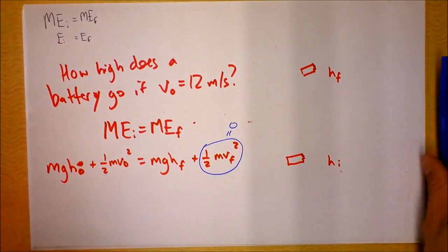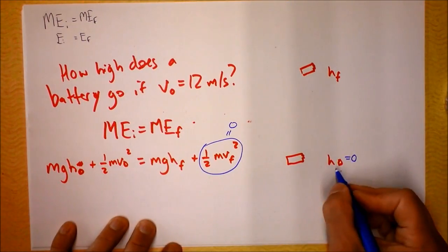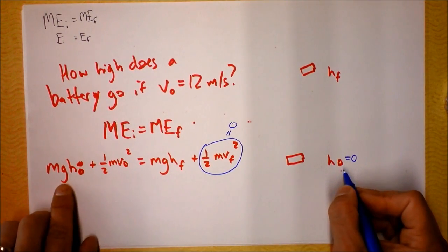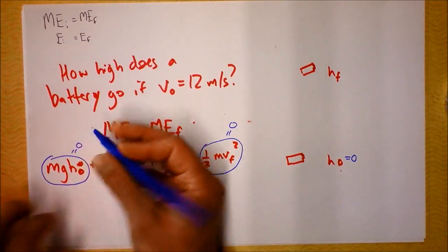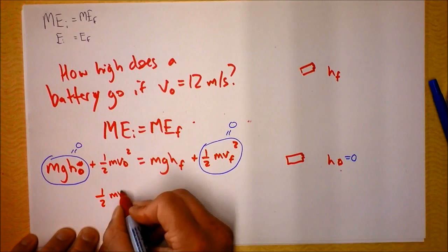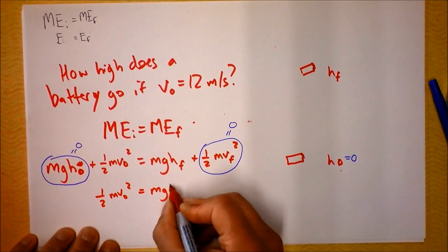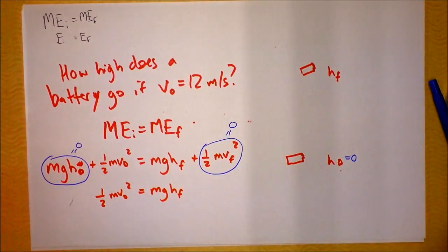Another thing that might be useful is to call this initial height zero because we get to choose what height is zero. Let's circle that and rewrite the problem. One half M V naught squared is M times G times H final. Notice I didn't give you the mass of the battery. Masses cancel.